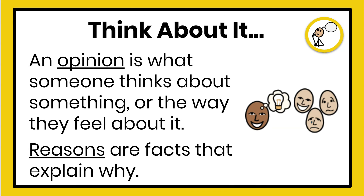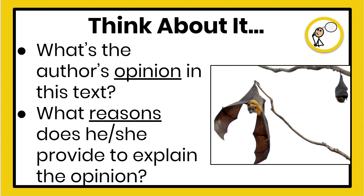Now that we've read the text, let's think about it. As you remember, an opinion is what someone thinks about something or the way they feel about it, and reasons are facts that explain why. Think about these questions: What's the author's opinion in this text? What reasons does he or she provide to explain the opinion? Use the text 'Bats Roosts in Danger' if you need help. Pause the video now and think about it.